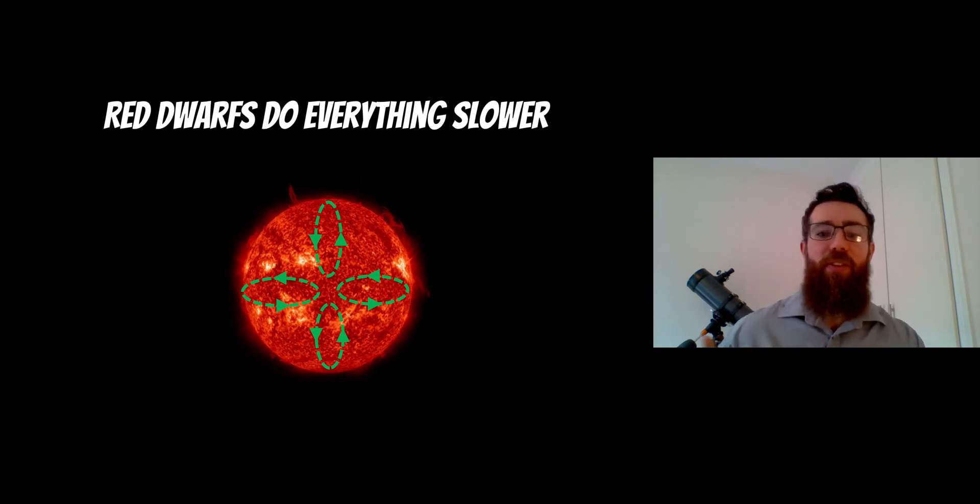With red dwarf stars they're fully convective so the whole star gets mixed down to the core so all of that hydrogen is able to be fused into helium. So as a proportion of the whole star they have more fuel available to them so they just keep on going and that's the main difference as to why they last a little bit longer as well than the bigger stars.